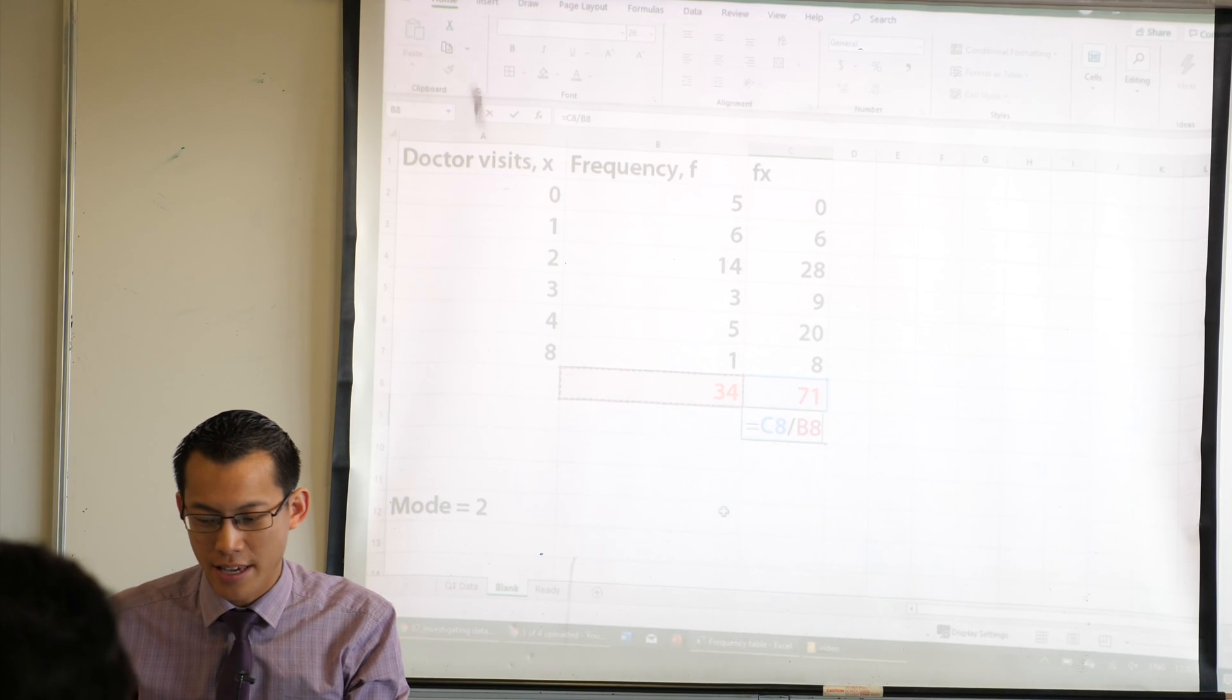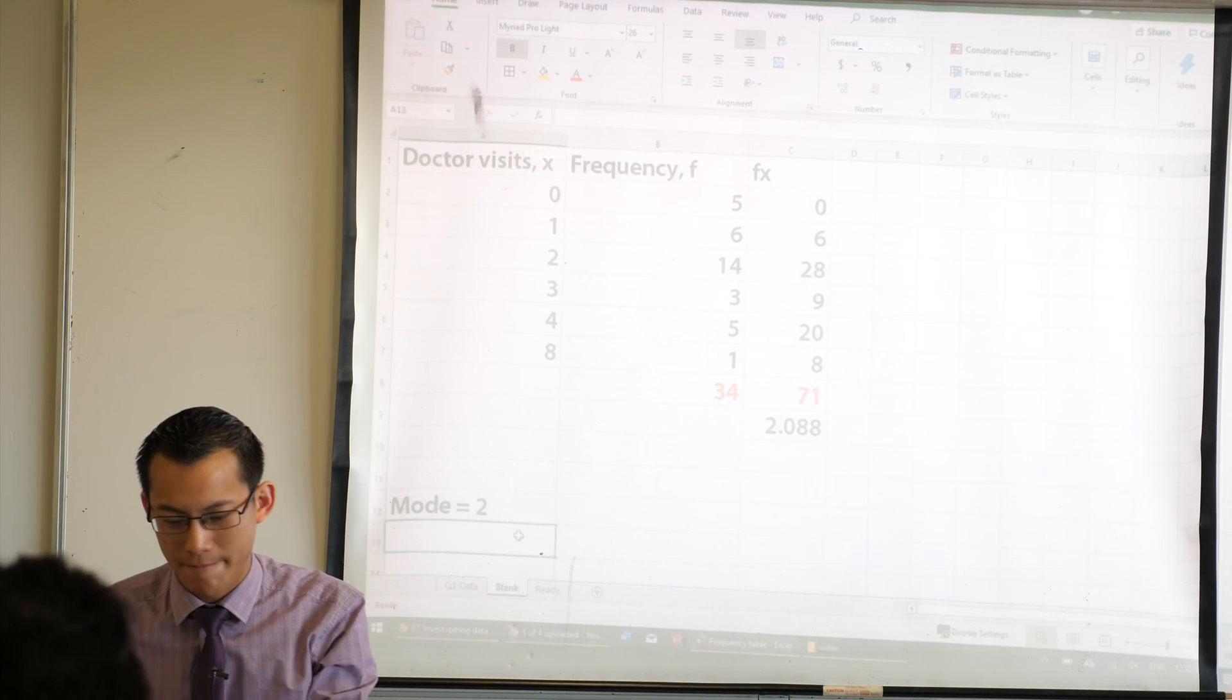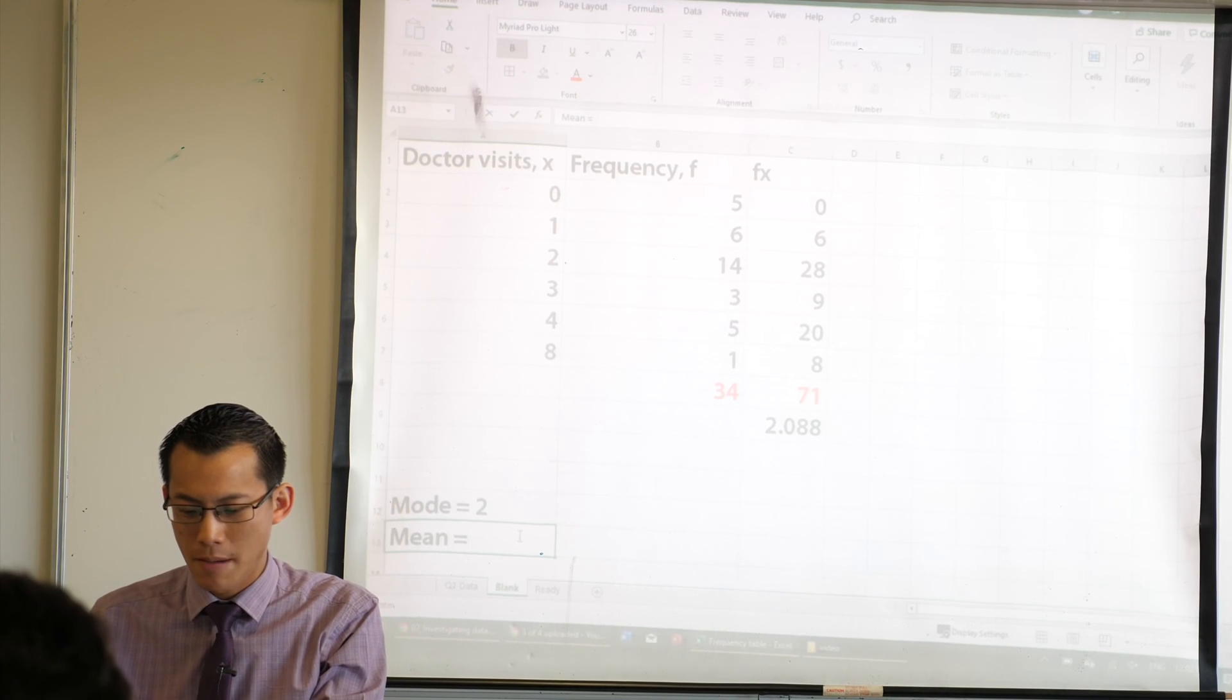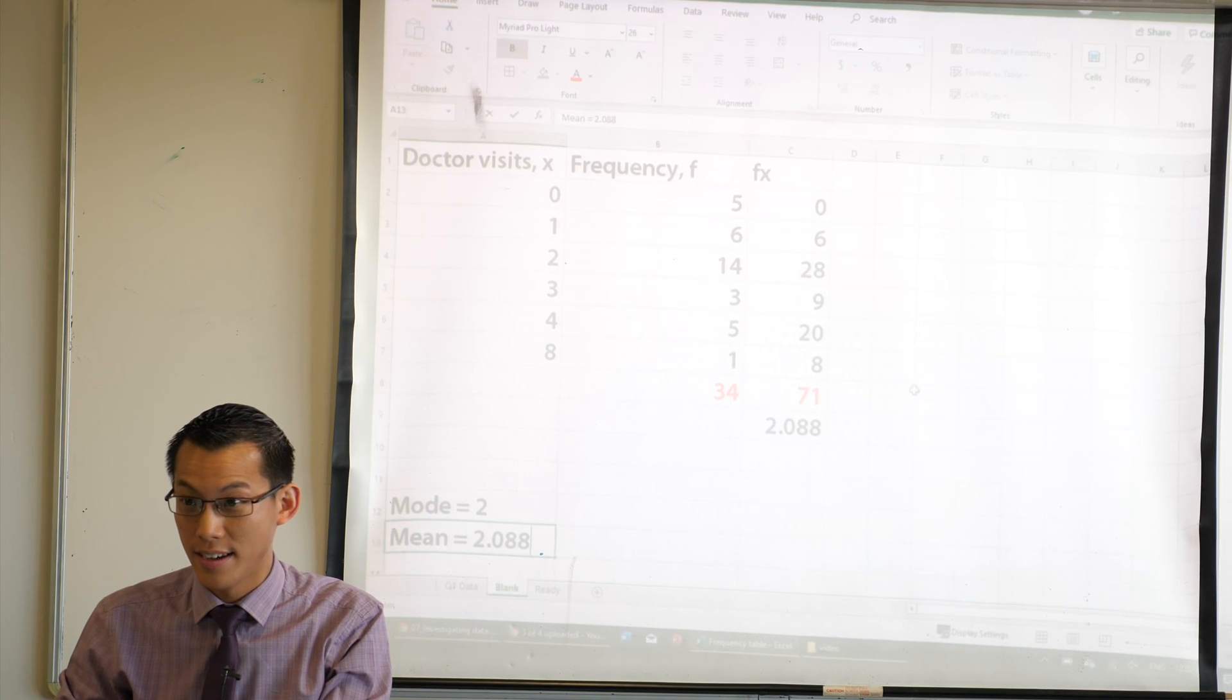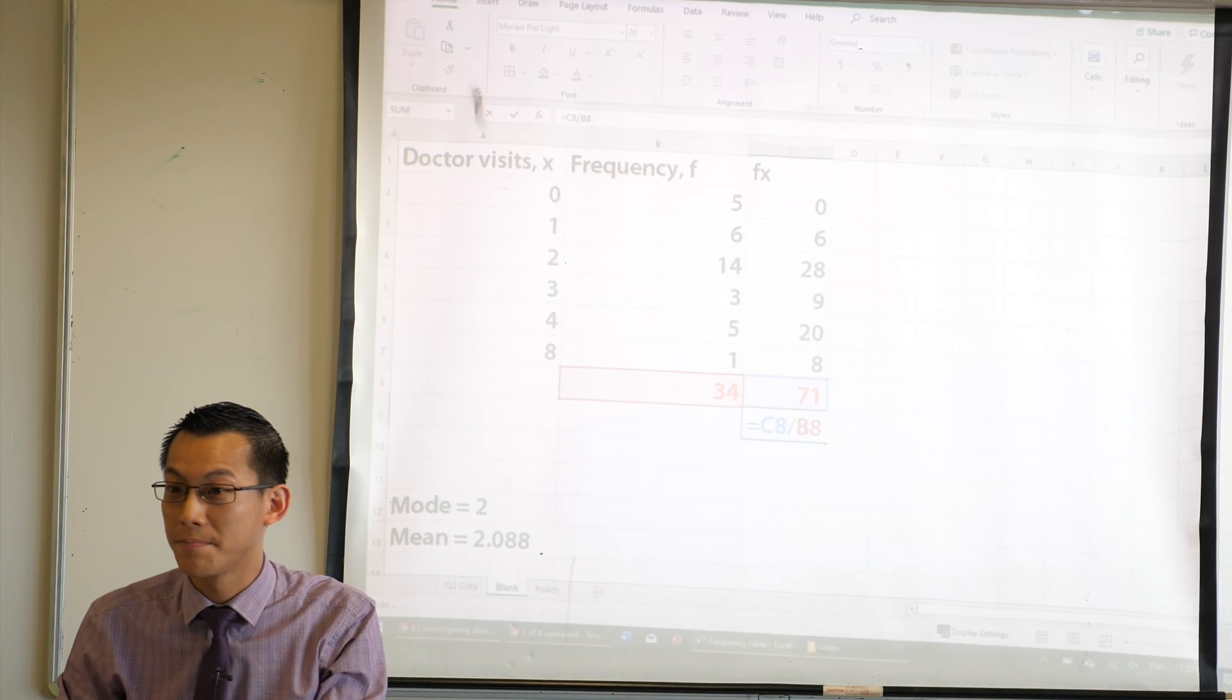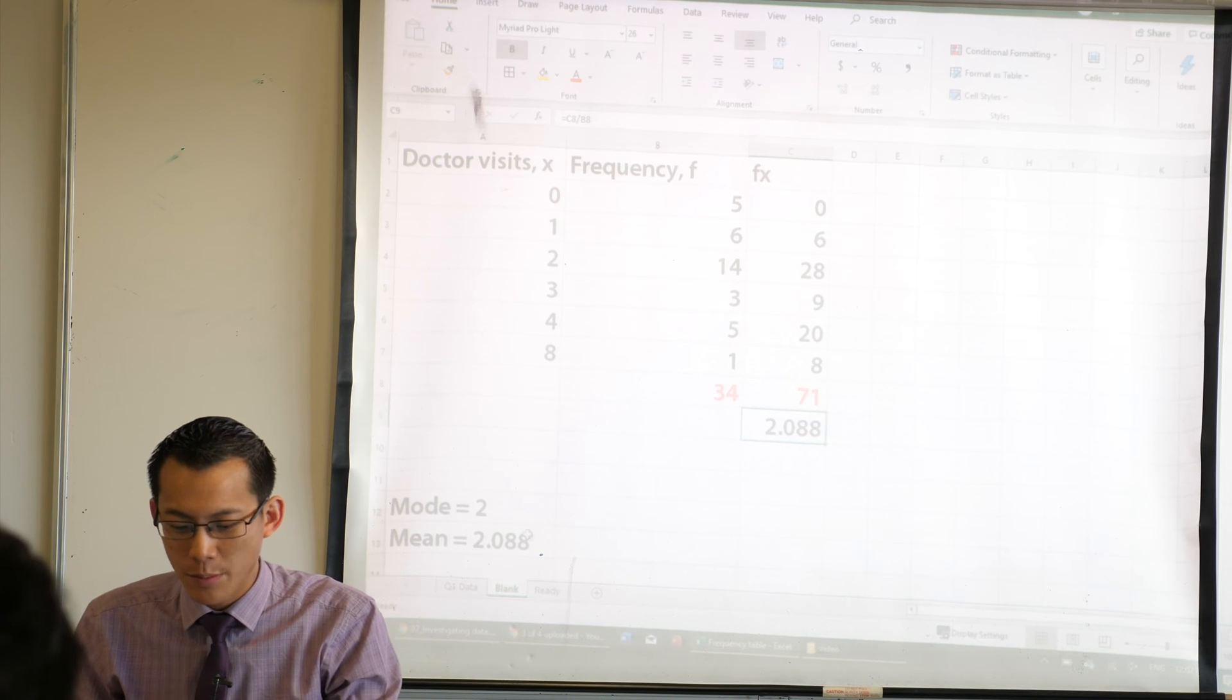You could actually write equals 71 divided by 34. But you might as well just use the number instead of it. Okay. So, you can see that. If I press enter, I get this number. Let's go ahead and we can write that down the bottom. Mean equals 2.0. Wait, we've got way more. What have we got? Did you get something else? Yeah, we got like one more. Oh, more decimals. Alright.